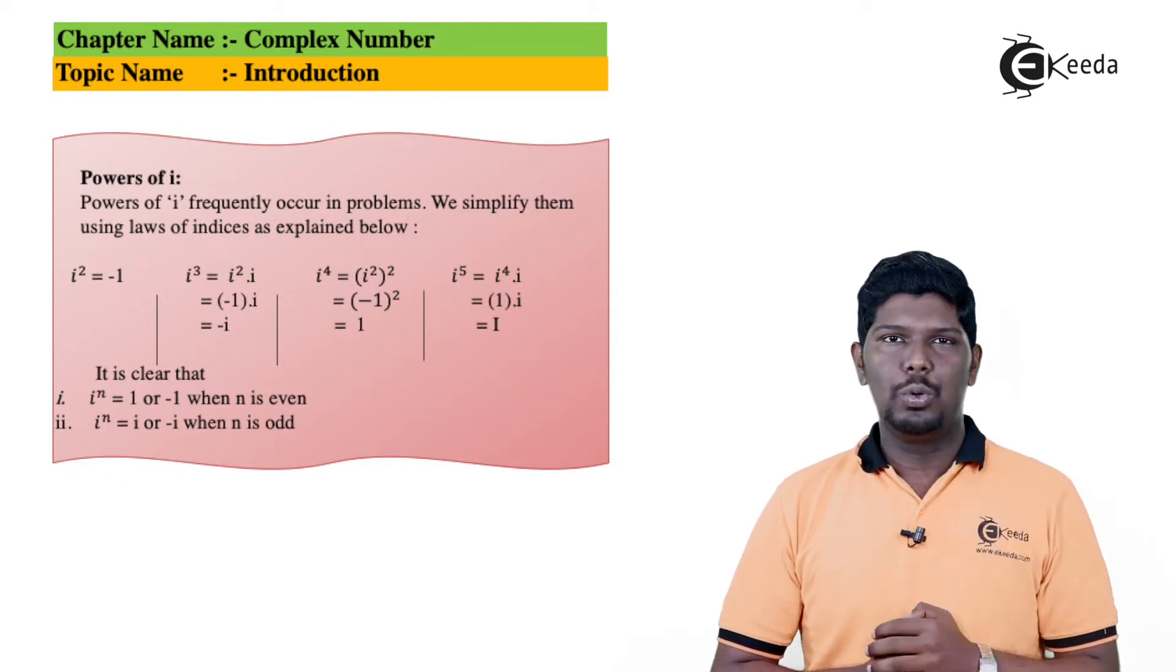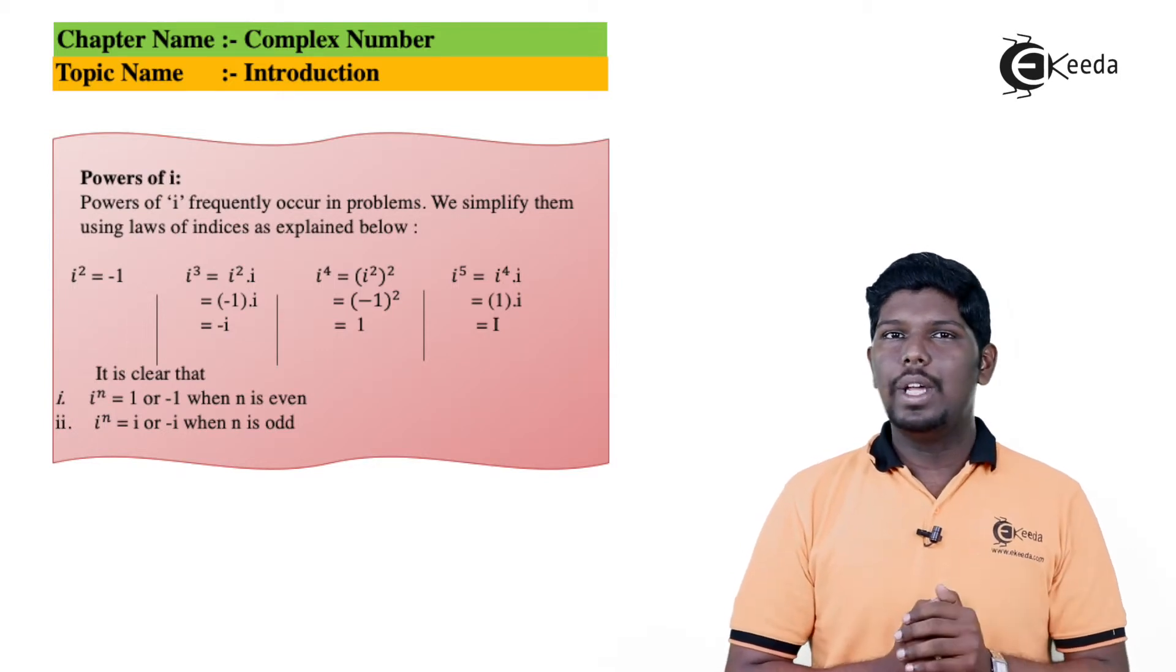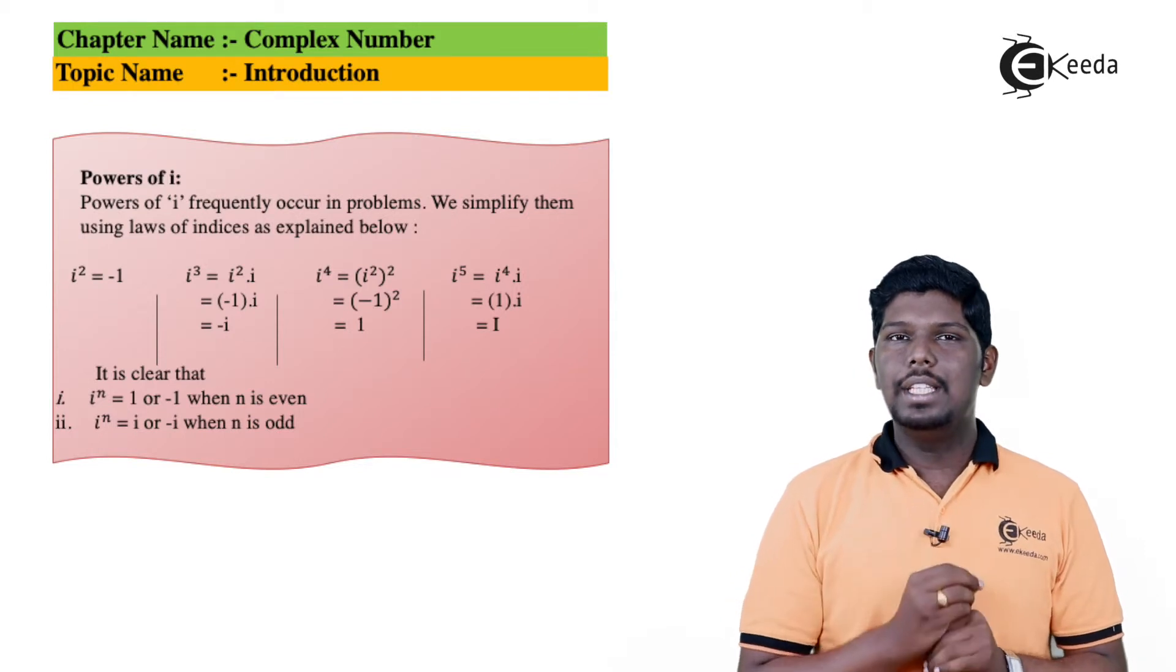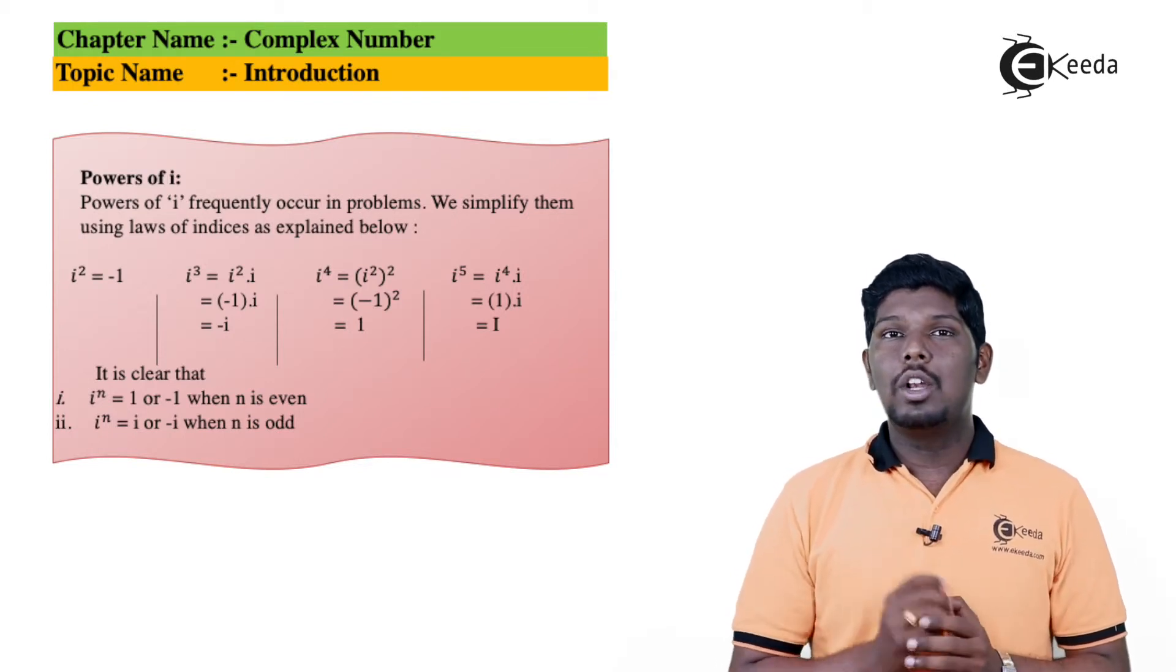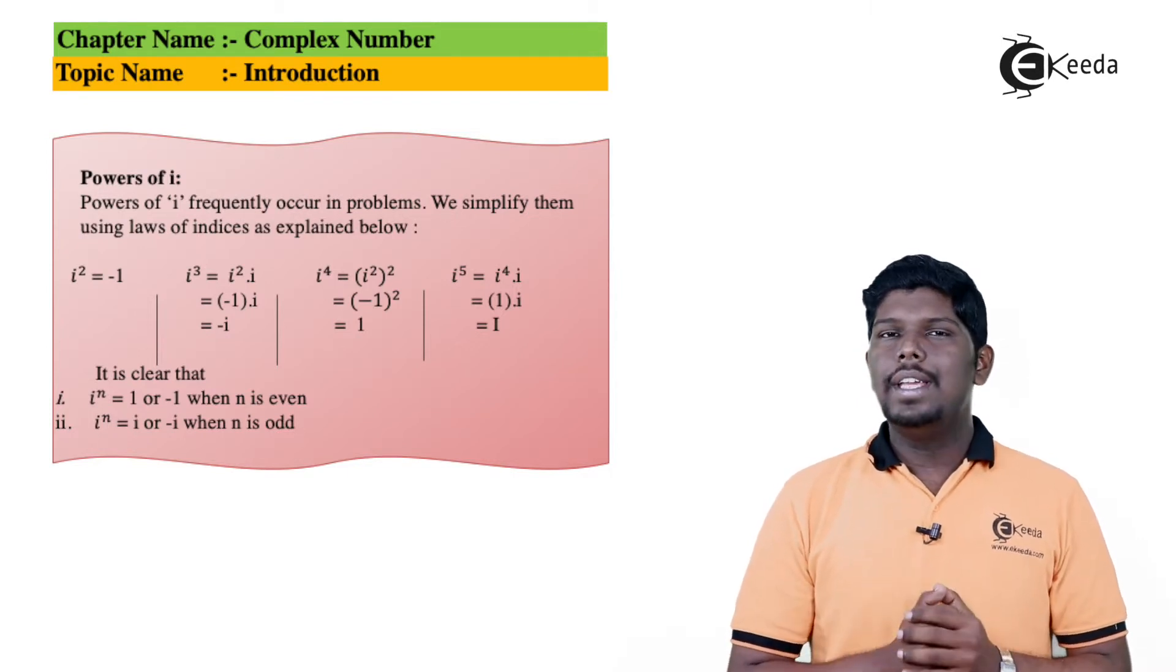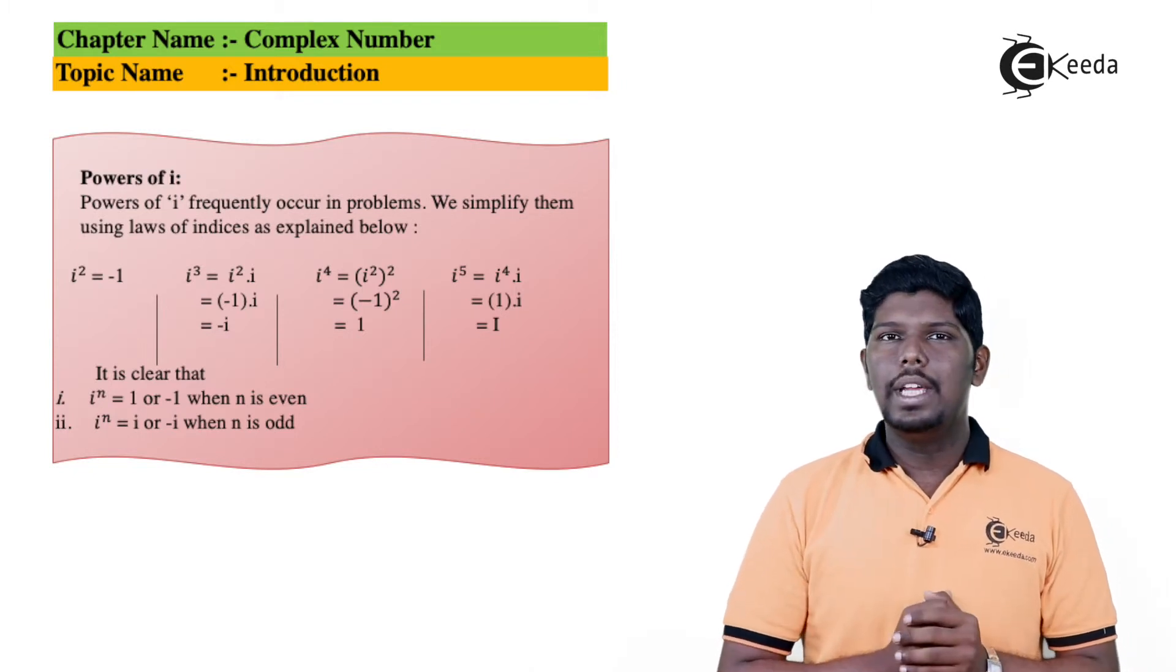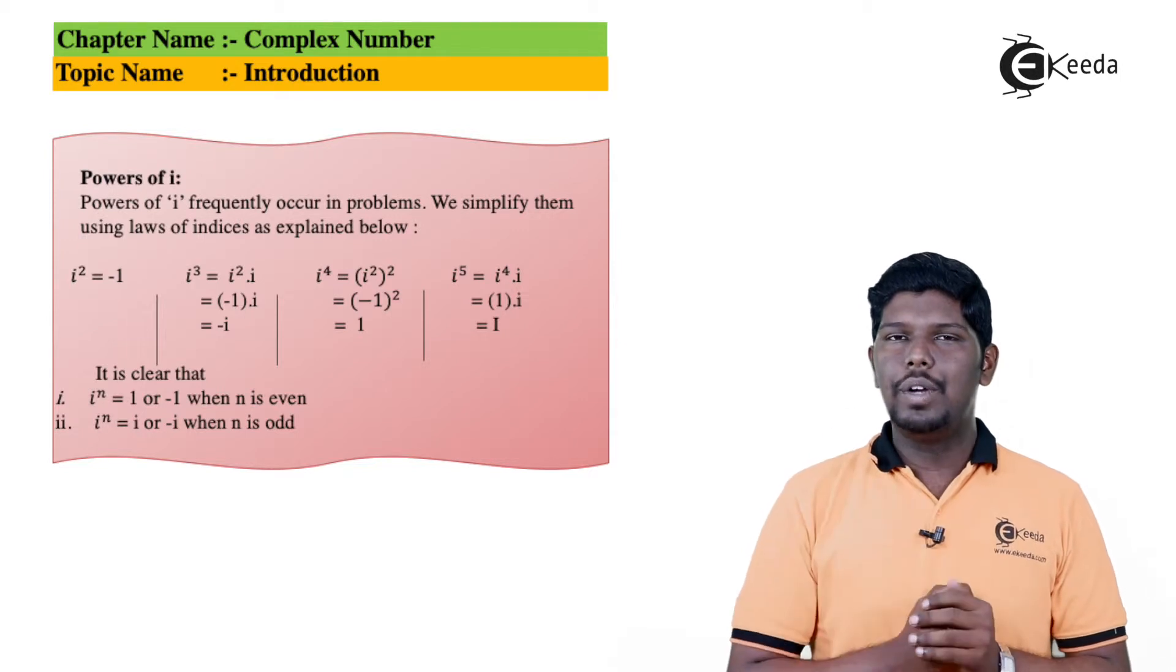Similarly, if we say i⁴, how can we write it? It is (i²)². What is i²? It is -1, and (-1)² will give you +1. It means the value of i⁴ = +1. Using similar laws of indices, we can find any power of i. For example, we need to find the value of i¹⁰. We can write it as (i²)⁵, which gives us (-1)⁵ = -1.